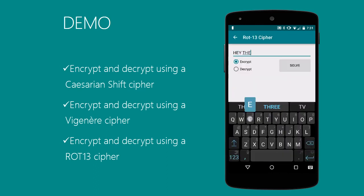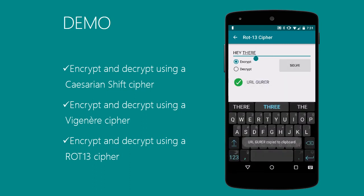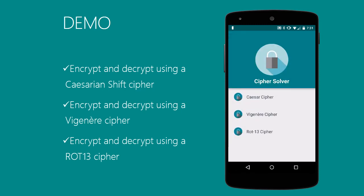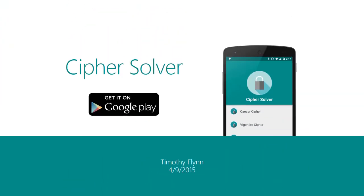We also have ROT13 — you can type 'hey there,' encrypt it, and it spits out the encoded string, which we can paste back in and decrypt to see our original message. So that's a quick demo of how the app works. That's an overview of my app, CypherSolver — check it out on Google Play if you want. I've been Tim Flynn, hopefully you enjoyed the presentation. Bye!